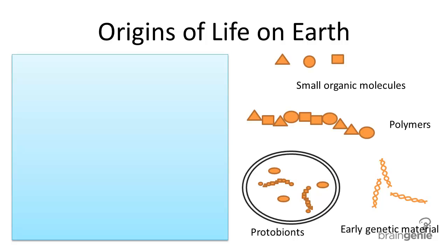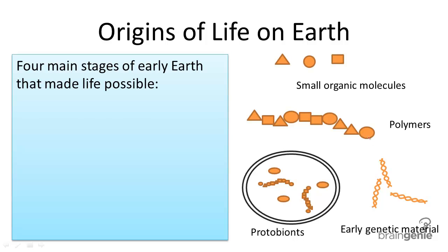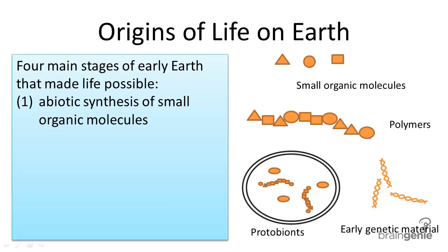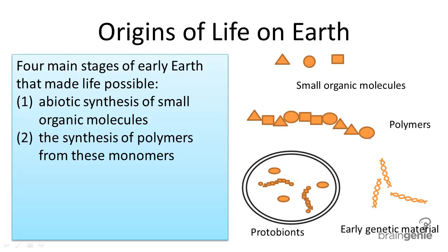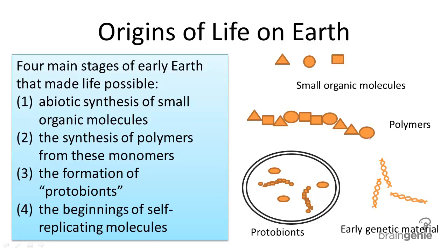According to scientists, there were four main stages of early Earth that made life possible. These are: abiotic synthesis of small organic molecules, the synthesis of polymers from these monomers, the formation of protobionts, and the beginnings of self-replicating molecules.